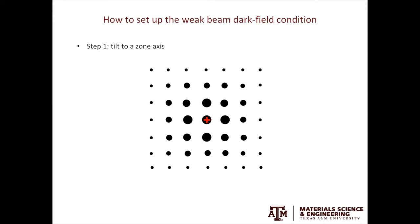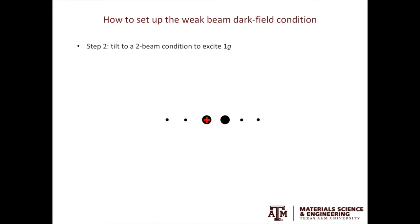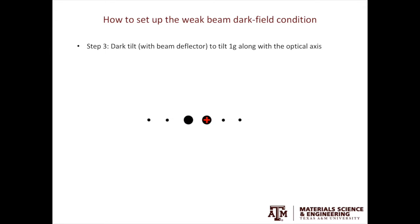The first step is to tilt your crystal or your specimen to a low index zone axis. The red cross in the center is the optical axis. The dark spots are the diffraction spots — the bigger the spots, the higher the intensity. Then you follow a Kikuchi band to form a two-beam condition to excite 1G. After that, you perform beam tilt to bring the 1G along the optical axis.